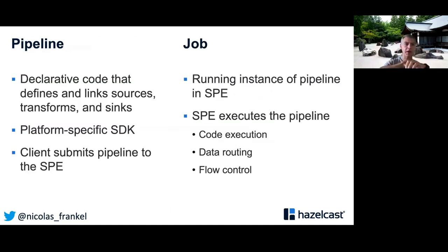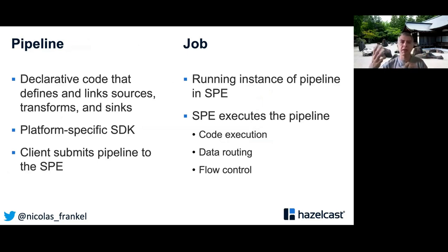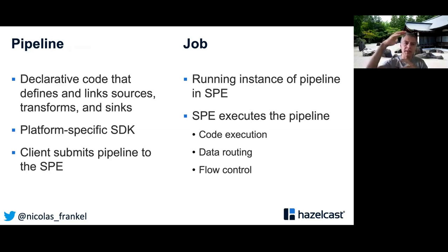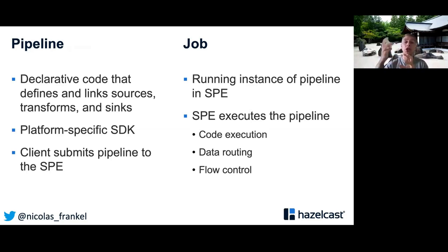JET has two concepts. The first is a pipeline, which is declarative code. If you've worked with Java streams or functional programming, it looks very similar — you read from a source, then you can map, filter, and do whatever you need, then you write. When you've declared that code, you send it to the stream processing engine and it becomes a job. The engine takes care of distributing it over the network and across cores on each node.